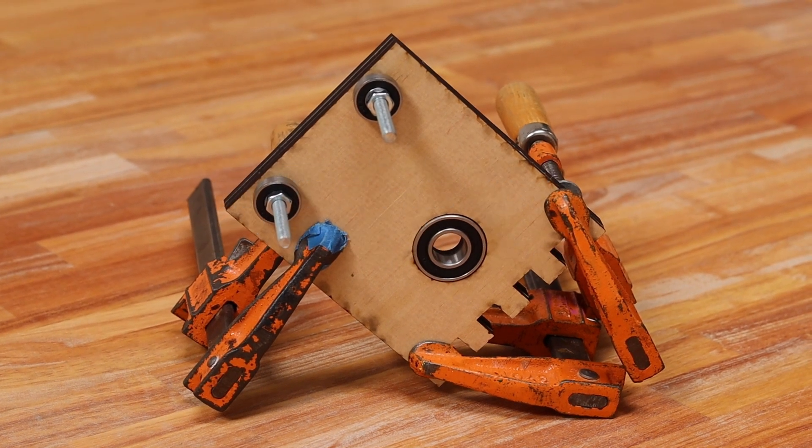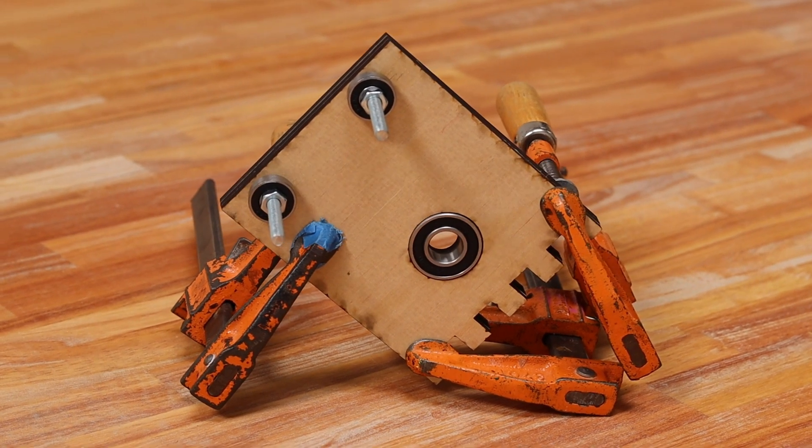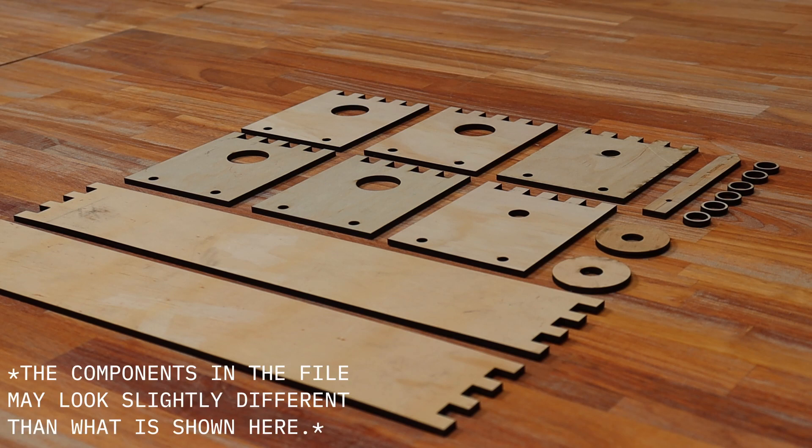Step number one. Laser cut the number one carriage wall components found in this file.